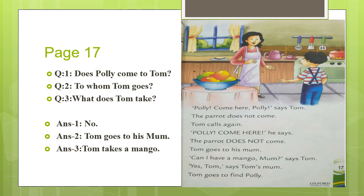Now I have some questions for you from page 17. Does Polly come to Tom? No. Very good. To whom does Tom go? Tom goes to his mom. Very good. Question number three: What does Tom take? Tom takes a mango. Very good. You have read the page and you know the answers. You have understood this page too.